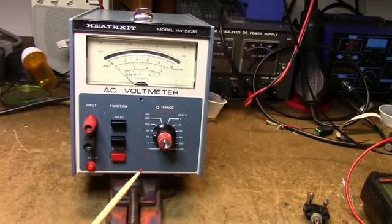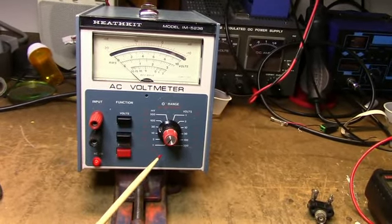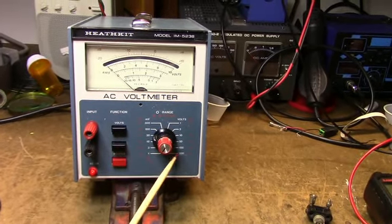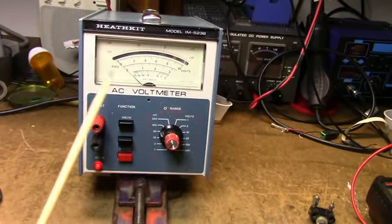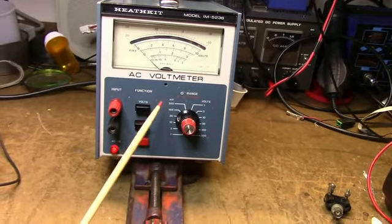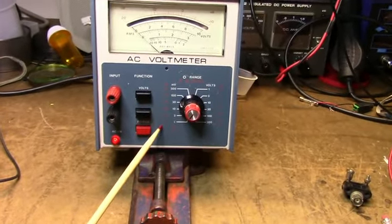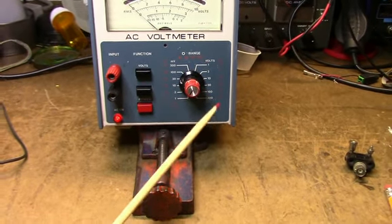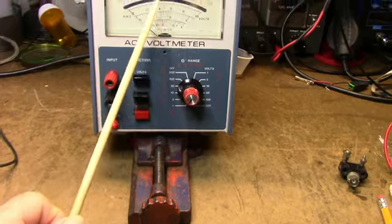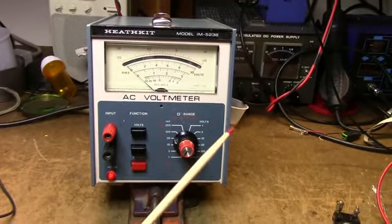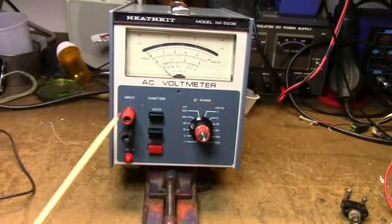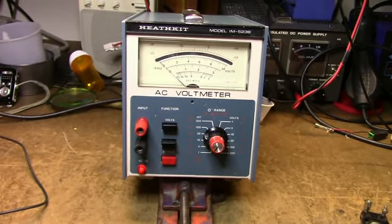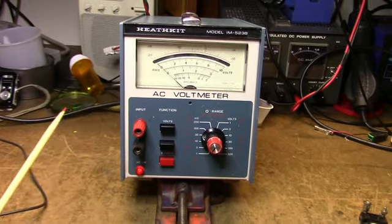They'll measure AC voltages from 12 different ranges, starting at 1 volt up to 300 volts. They also have a decibel range which measures 0 decibels to plus 40 decibels using the red scale on the top of the meter. Here's the inputs, and there's also outputs on the back.